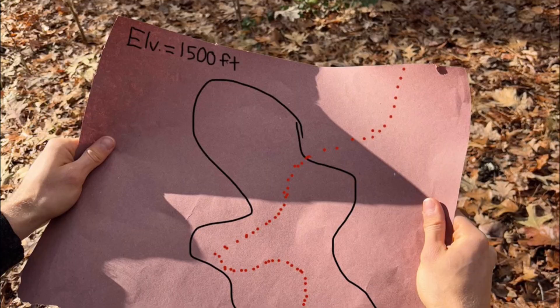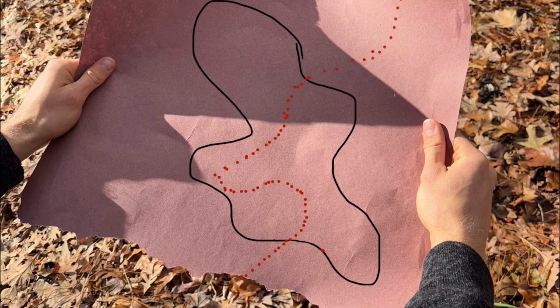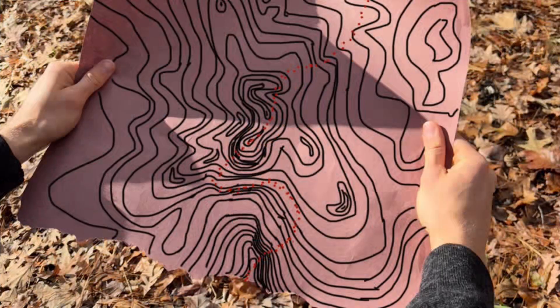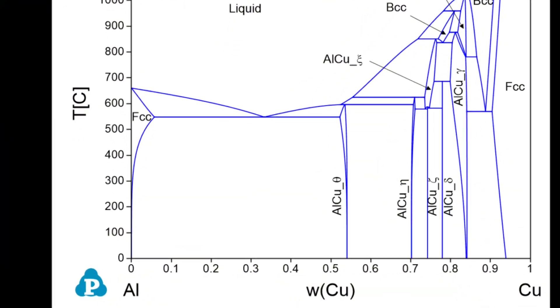It would basically be like planning a hiking route on a mountain only knowing one specific elevation without the full picture. Despite this, I'm going to try anyway. To make it a little easier, I'm going to start somewhere familiar in the aluminum-copper system and then branch out.